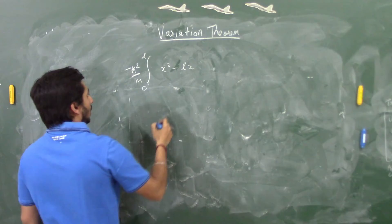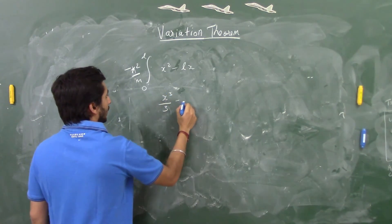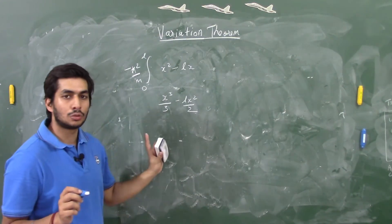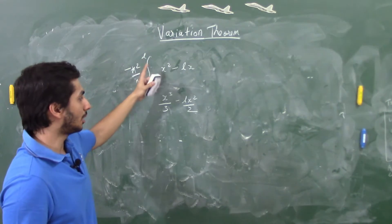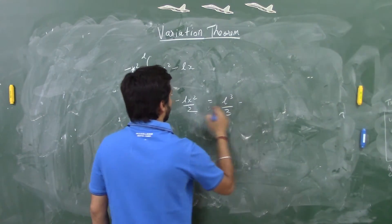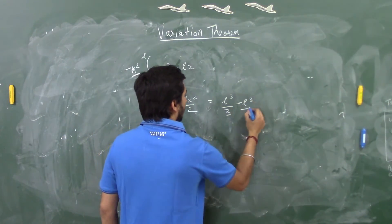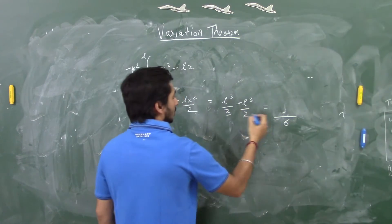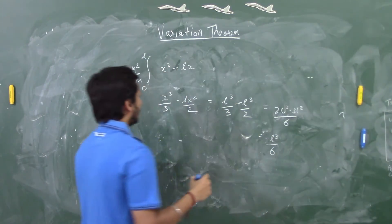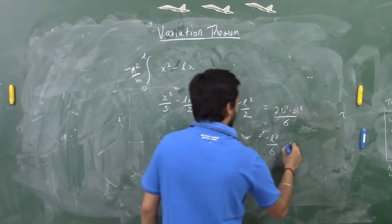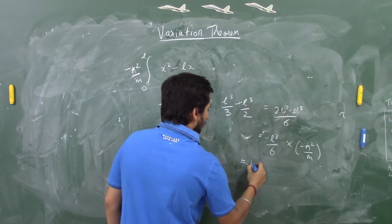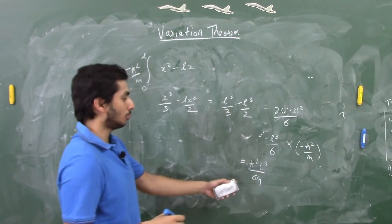Integrating x² − Lx gives x³/3 − Lx²/2. The lower limit is 0, so both terms vanish there. At the upper limit x = L: L³/3 − L·L²/2 = L³/3 − L³/2. Taking common factor 6: (2L³ − 3L³)/6 = −L³/6. Combined with the outside factor −ℏ²/m, the two negatives cancel, giving us ℏ²L³/6m in the numerator.